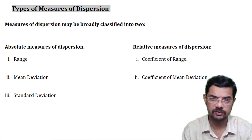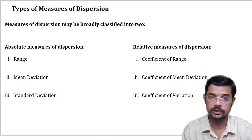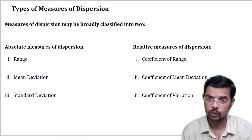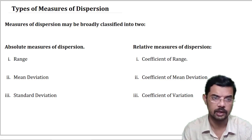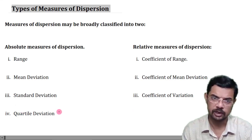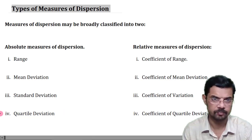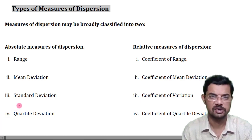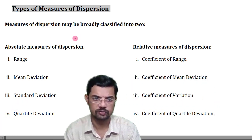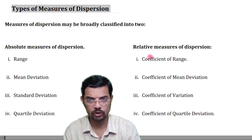The third absolute measure is standard deviation, and the corresponding relative measure is the coefficient of standard deviation, also called the coefficient of variation. The fourth absolute measure is quartile deviation, and its corresponding relative measure is the coefficient of quartile deviation. So the absolute measures are range, mean deviation, standard deviation, and quartile deviation.